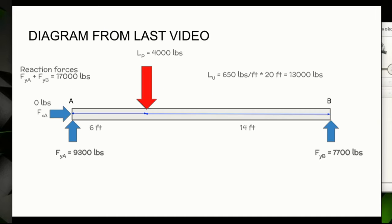In our last video we ended at this point: we had a beam that had a uniform loading of 650 pounds per foot times 20 feet, so overall it was 13,000 pounds, and then we had a point load of 4,000 pounds here, a reaction force of 9,300 here, and a reaction force of 7,700 here. We know that there's a total of 17,000 pounds acting on this beam.